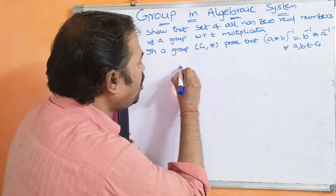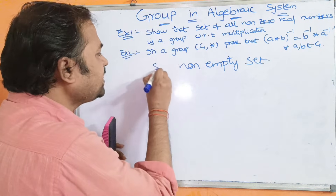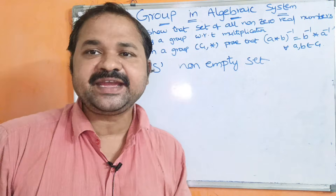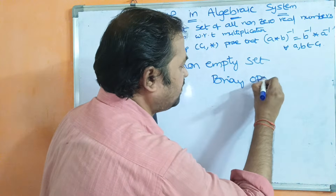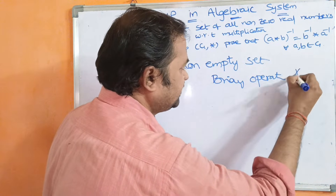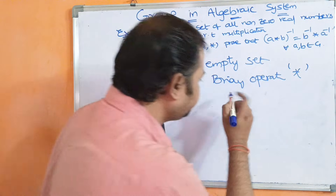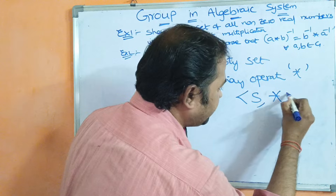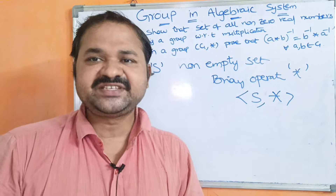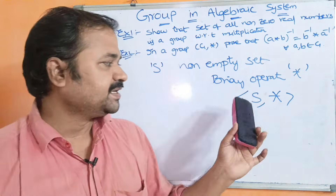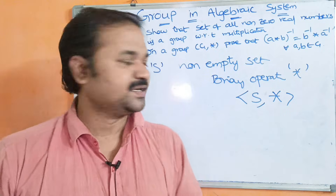Let S be a non-empty set — meaning this set must contain some elements — and let star be a binary operation, which may be any operation: plus, star, minus, or any operation, performed on the set. Then an algebraic system S comma star, where S is the non-empty set and star is the binary operation, is called a group if it satisfies four properties.